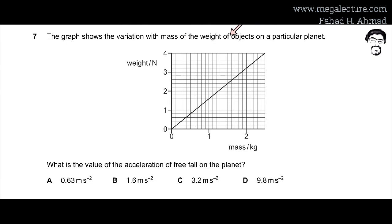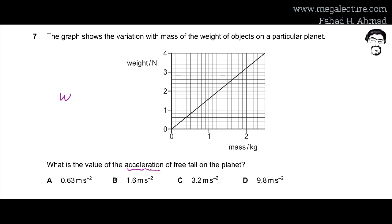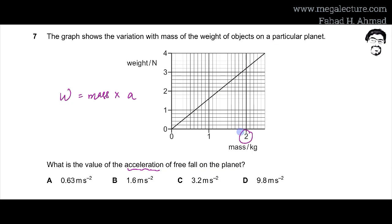MCQ number 7: a graph shows the variation of weight with mass for objects on a particular planet. As mass increases, weight increases. We need to find the acceleration due to gravity on this planet. Using W = m × a, since it's a linear graph, we can pick any point. For a mass of 2 kg, the weight reads approximately 3.2 N.